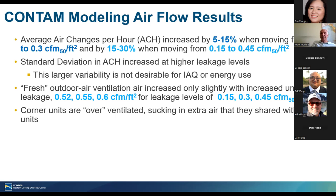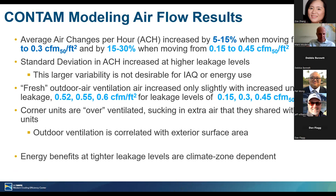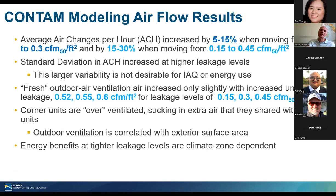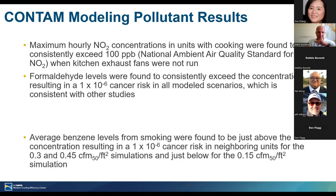Not surprisingly, corner units are overventilated, sucking in extra outdoor air which they in turn share with interior units — not a big surprise given that corner unit surface area to outside is much larger. At the tightest leakage level, corner units have almost all their air coming from outdoors, while middle units have only about 30% of their air coming from outdoors. The variation in the fraction of outdoor air changes dramatically as you go to leakier buildings, and particularly for middle units, the fraction of outdoor air can range from nearly 0% to 60% in a leaky building.